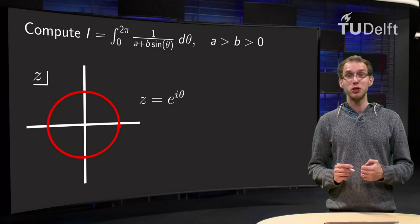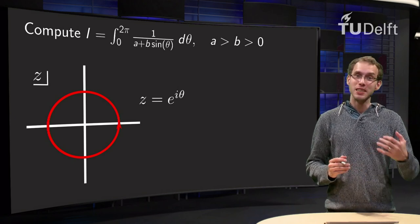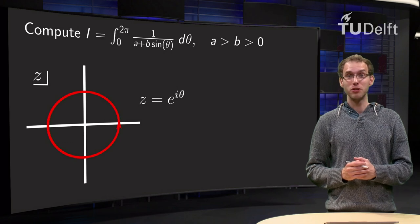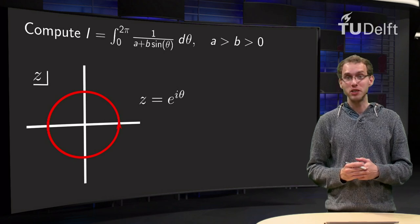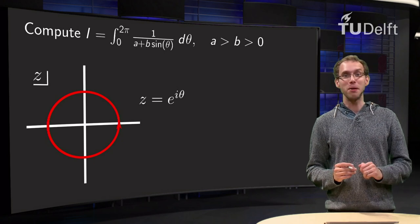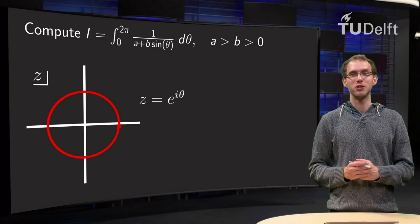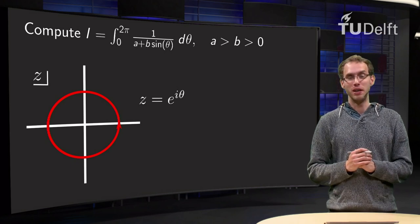In an earlier calculus course, you may have seen so-called trigonometric substitutions. This is a technique to compute integrals when coefficients of sines and cosines are involved, and they are quite messy. Fortunately, this type of integrals can be done much easier and faster using complex variables. How? You will learn that in this video.